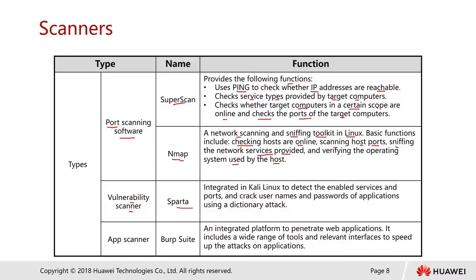The next type is a vulnerability scanner. One example is Sparta, which is integrated software in Kali Linux. It detects enabled services and ports, and can also crack the username and password of applications using a dictionary attack. The next type is an app scanner — one popular tool is Burp Suite, also available in Kali Linux. It is an integrated platform for performing penetration tests on web applications, including a wide range of tools and interfaces to speed up attacks on applications.